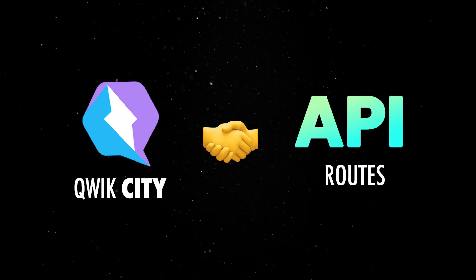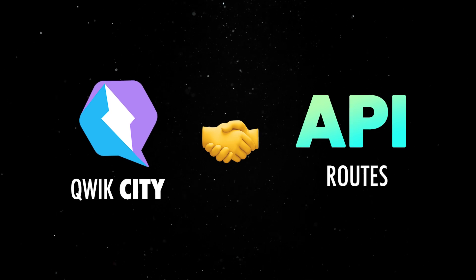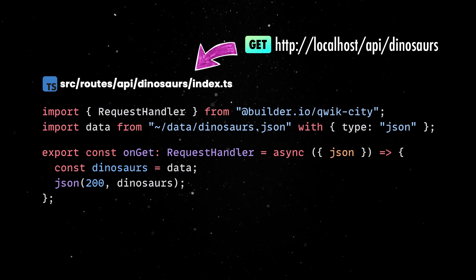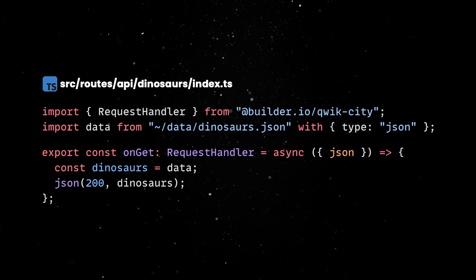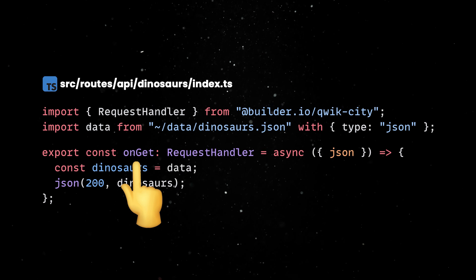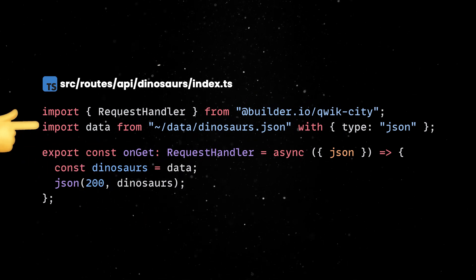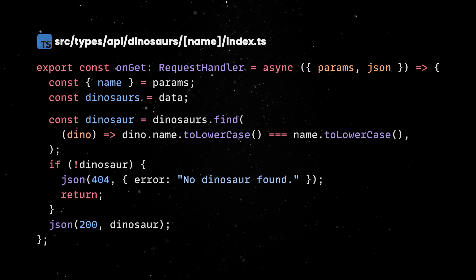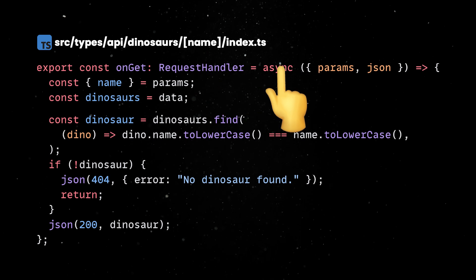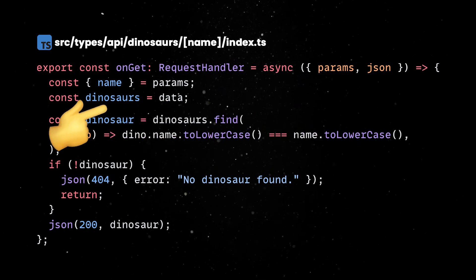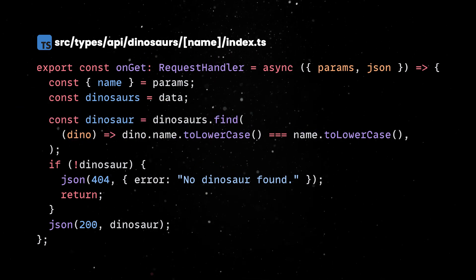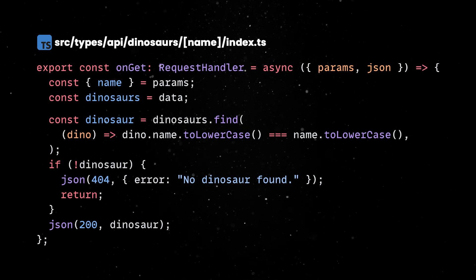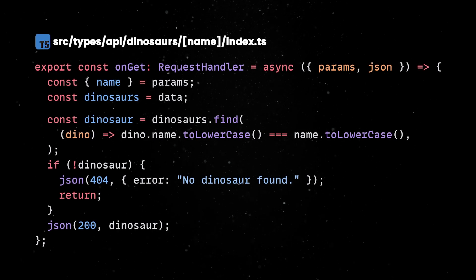QwikCity offers support for API routes, which can be used by UI components to communicate with the server. Let's create a new file under Routes API Dinosaurs, which will match the incoming HTTP requests at this URL. Inside this file, we'll export an onGet request handler. When accessed, the data is simply imported from the disk and sent as a JSON response using the 200 success code. Following the same example, we'll define a dynamic route that uses the URL path variable. The parameter is passed in the handler and we'll use it to find the entry in the dinosaurs list. The handler will return the requested data if it exists, or a 404 error if no dinosaurs were found. We can start the server and access these URLs from the browser to get the actual raw data.